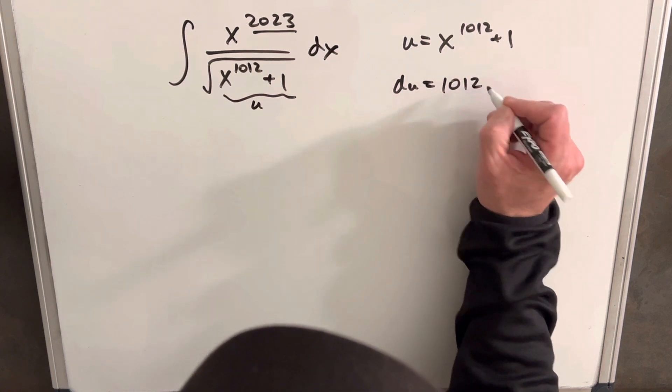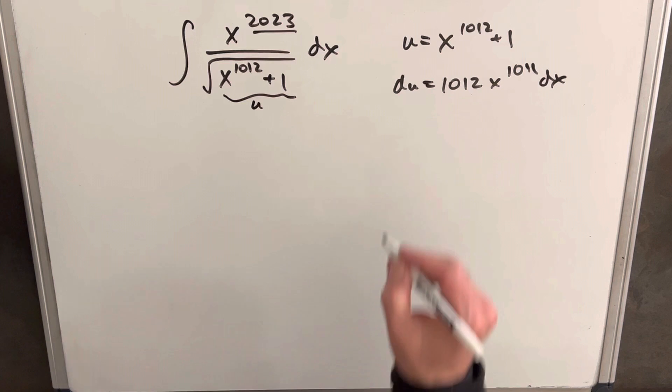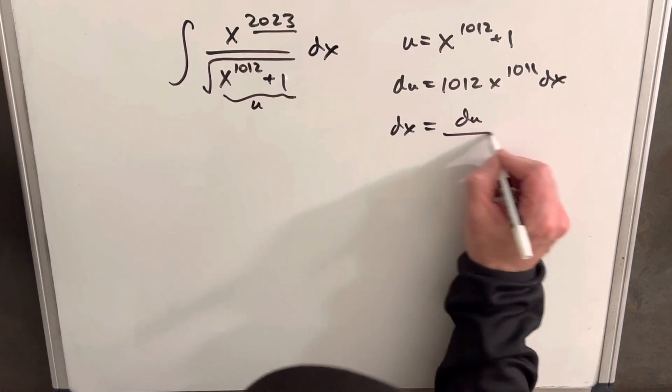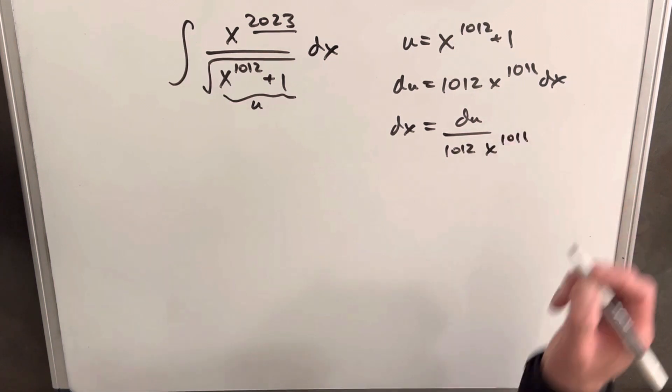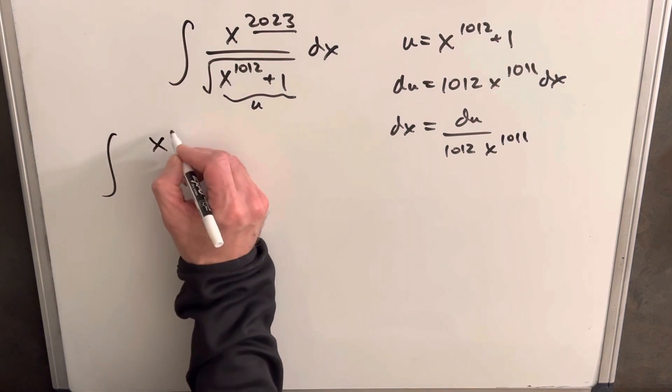And I'll just solve for dx by dividing on both sides, so we're going to have du over 1012 x^1011. So we'll make our substitution.